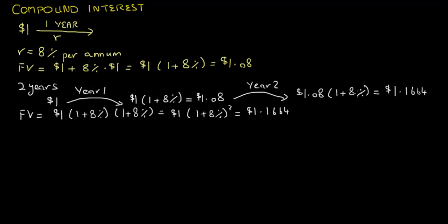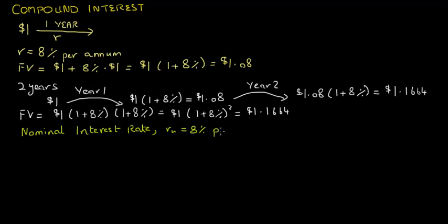In finance, interest rates are often quoted on a per annum basis but may be compounded with different frequency. In our example so far, the interest rate is compounded annually. Let's say the bank account pays a nominal interest rate, denoted by Rn, equal to 8% per annum, but the interest rate is compounded quarterly.